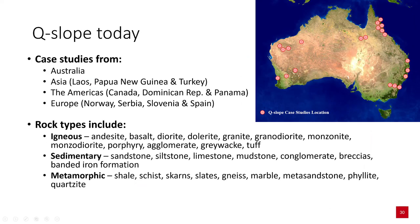Q-slope today — there are case studies from Australia, Asia, the Americas, and across Europe. Rock types include igneous, sedimentary, and metamorphic rocks.